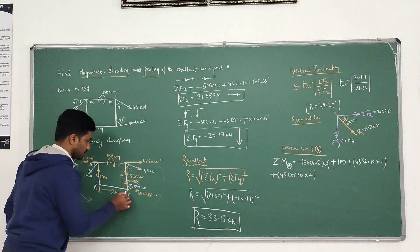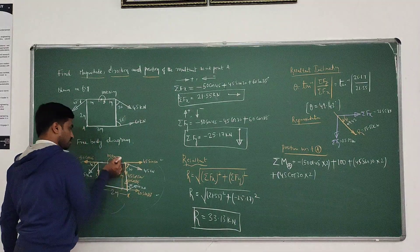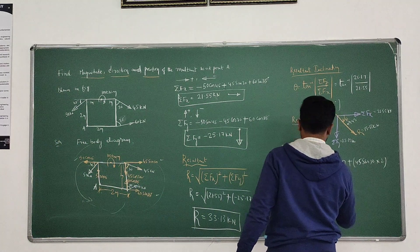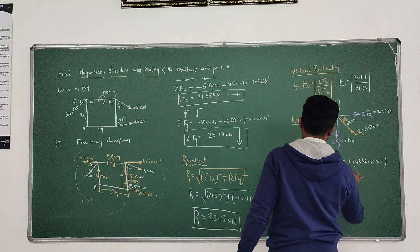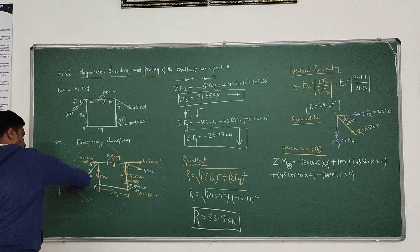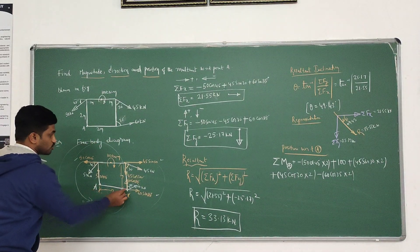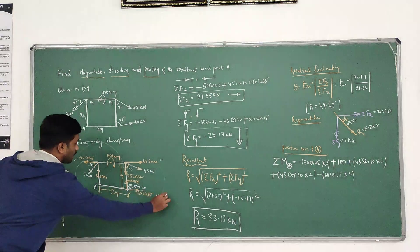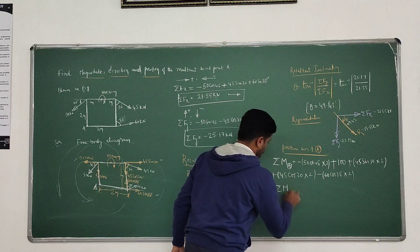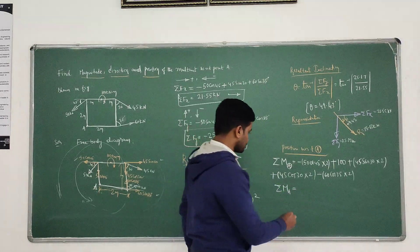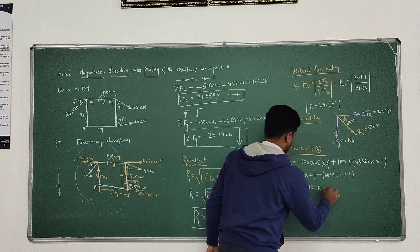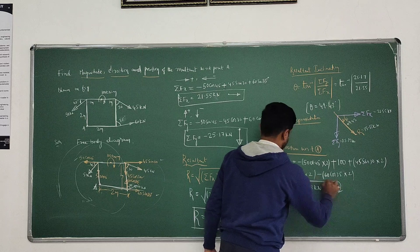The couple is already a moment. Don't confuse it with the distance values given. When computing the resultant, take the couple value directly — do not multiply it by any distance, because it is already a product of force into distance. This completes the free body diagram on a 2m by 2m square grid.